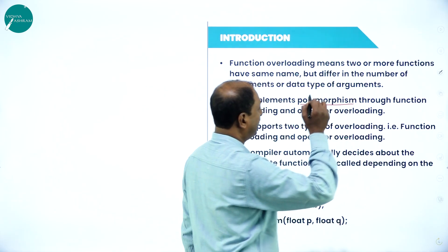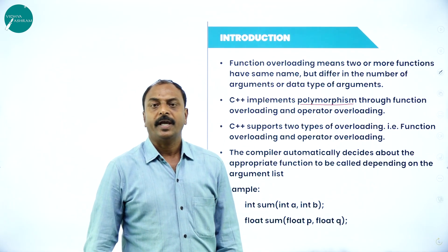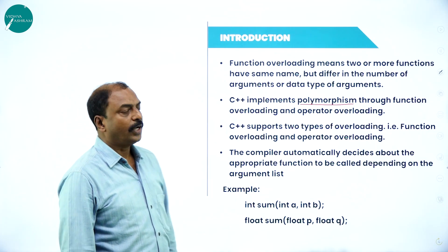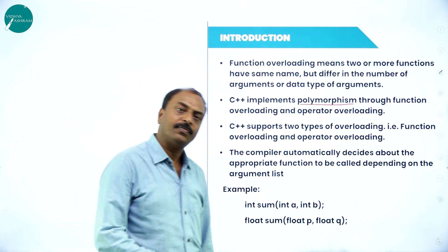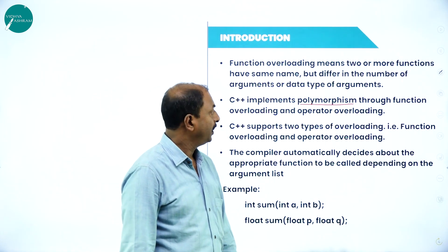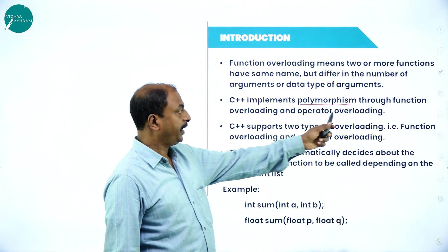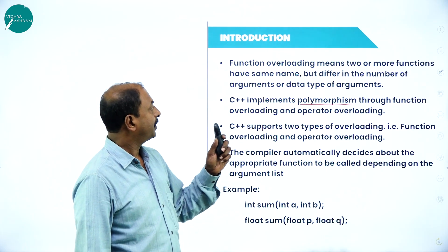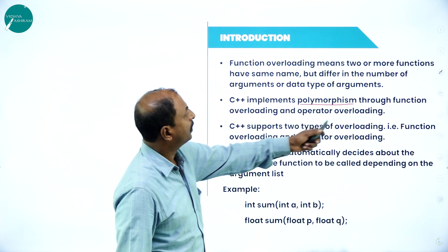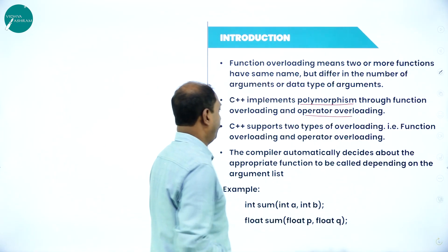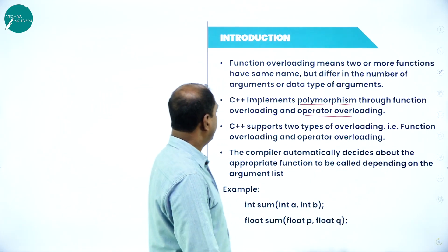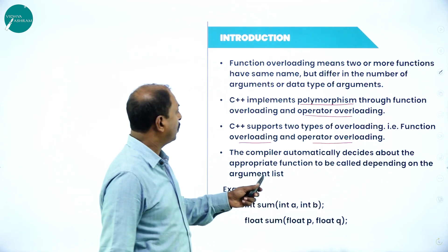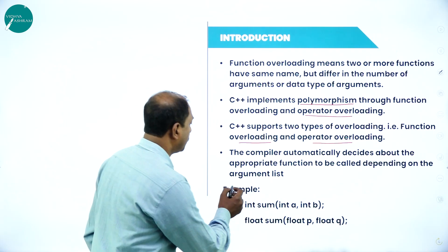Polymorphism is a behavior of an object depending on the circumstances or situation — one object shows different behavior depending on the situation. Using function overloading means we are implementing the concept of polymorphism in OOP. C++ supports two types of overloading: function overloading and operator overloading. The compiler automatically decides which function to call based on the arguments.